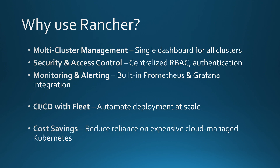Now let's talk about cost. If you're using AWS EKS, Azure AKS, or Google GKE, you're probably paying a premium just for the privilege of having them manage your Kubernetes cluster. These services often have hidden costs like data egress fees, expensive load balancers, and per-node pricing. Rancher lets you take control of your Kubernetes costs by running your own clusters wherever you want — whether it's bare metal, VMs, or a private data center — helping you cut cloud costs without sacrificing performance. To sum it up, Rancher gives you a single dashboard to manage everything, built-in security, advanced monitoring, full automation with Fleet, and total control over your infrastructure. And best of all, Rancher is completely open source and free to use.